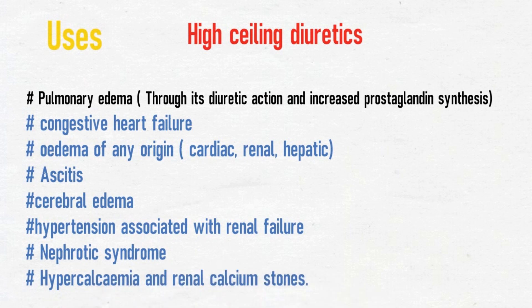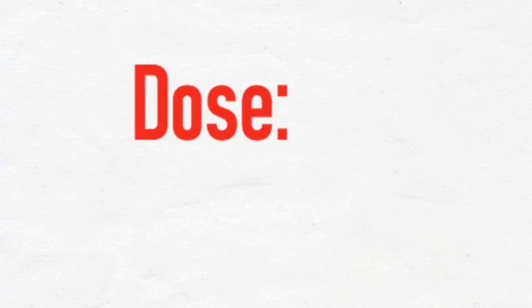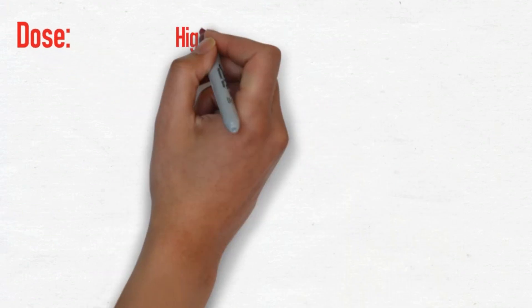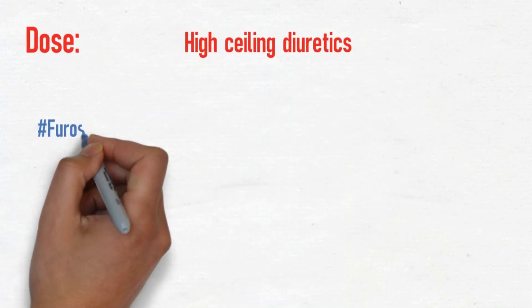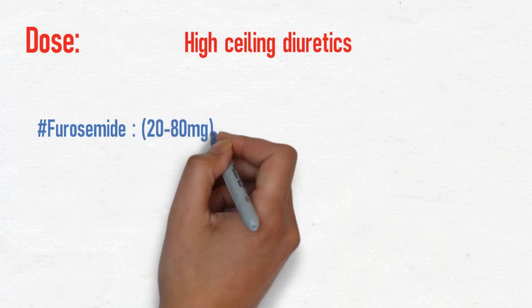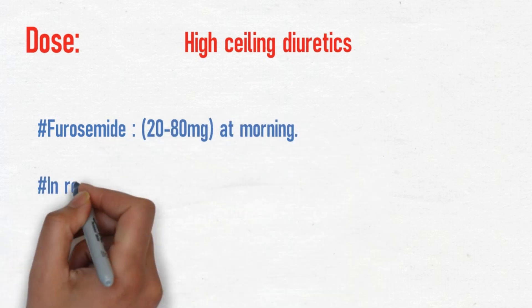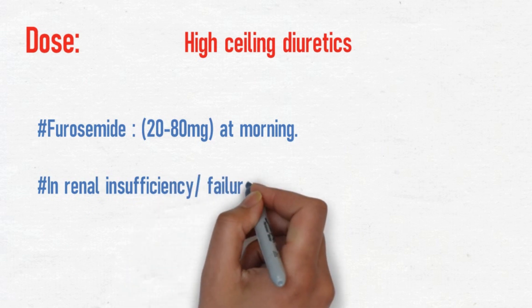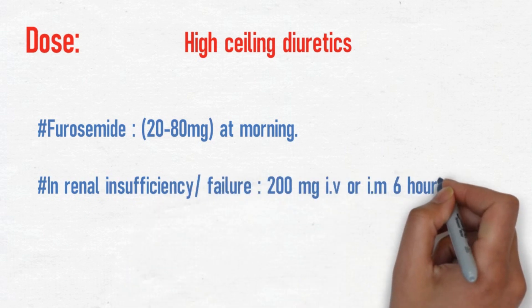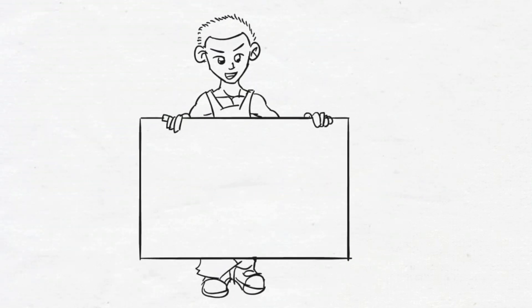Regarding dosage: furosemide is given at 20 to 80 mg in the morning. In renal insufficiency or failure, 200 mg intravenous or intramuscular is given six-hourly.